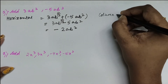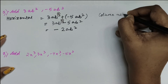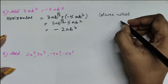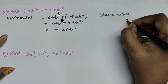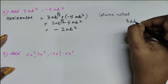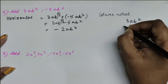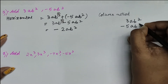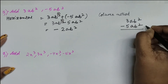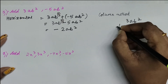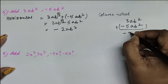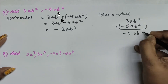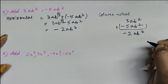In the column method, these are just the terms, so you can write one below the other. Even though we are adding, the symbol is going to be minus, giving us minus 2ab squared.